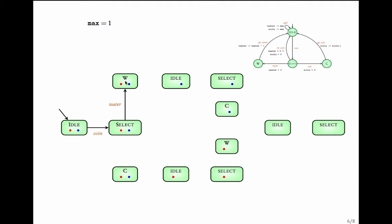So we go into the state with location w and n_water equal to 1, n_cola equal to 1. Similarly, from select, we can take the transition for cola since n_cola is bigger than 0, and since this transition does not change the variables, we go to state c with the same variable values. When a water bottle is ejected, n_water becomes n_water minus 1. So from w on get_water going to idle, the effect reduces n_water by 1.